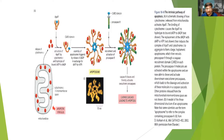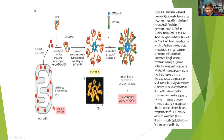Apaf-1 gets activated and requires ATP to be hydrolyzed. This protein assembles into a cyclic structure — shown in blue — called the apoptosome. Pro-caspase-9 binds to this specific region, and the cyclic structure activates caspase-9. Then the caspase cascade starts and the cell undergoes apoptosis. This is the intrinsic pathway.